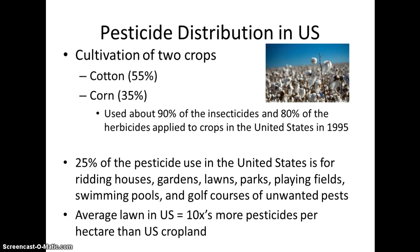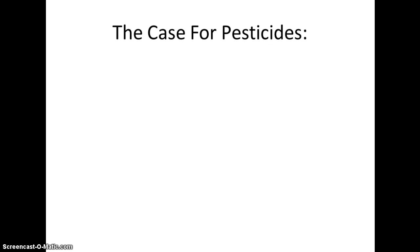Homeowners generally aren't educated on how much to apply, and we tend to care a lot about how our lawns and homes look. As a result of pesticide use around the house, there are about 250,000 illnesses reported by residents each year.